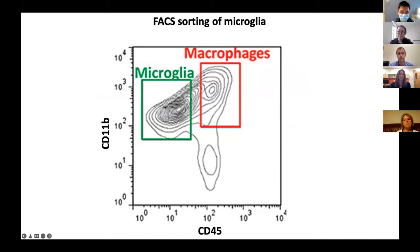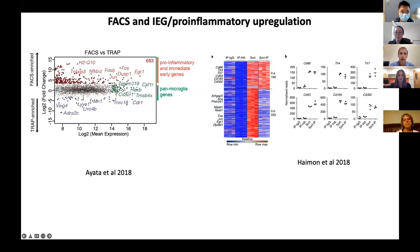Microglia are defined as cells positive for CD11b and low in CD45 expression, whereas peripheral macrophages that infiltrate into the brain are also CD11b positive but high for CD45. While this is a fantastic technique, there are numerous lines of evidence that flow sorting can upregulate expression of immediate early genes such as CFOS, as well as pro-inflammatory genes — what some call activation markers. Two beautiful papers from Ann Schaefer and Stephan Young's group show that FACS sorting upregulates these pro-inflammatory and immediate early genes.